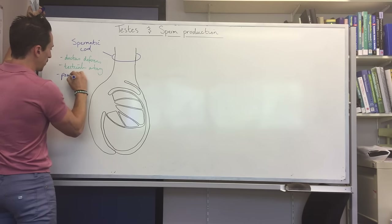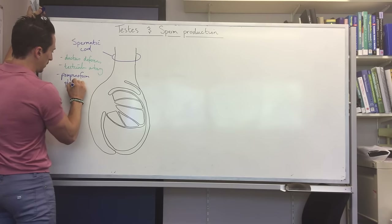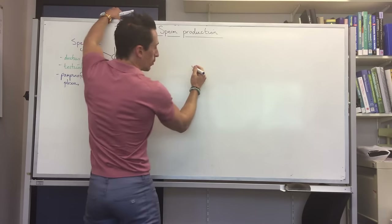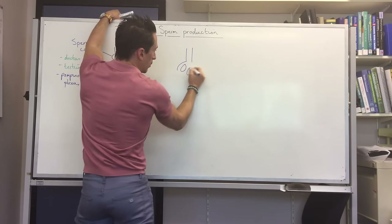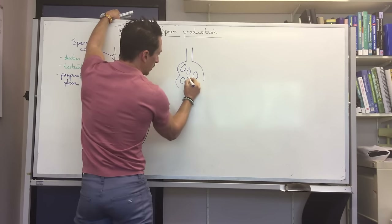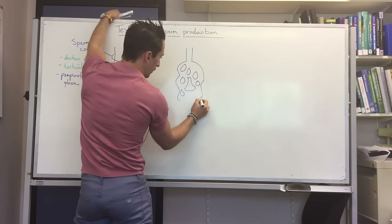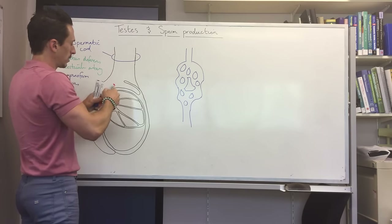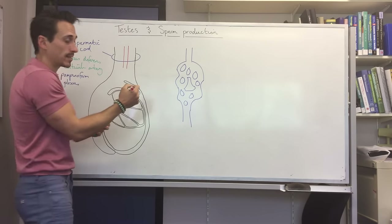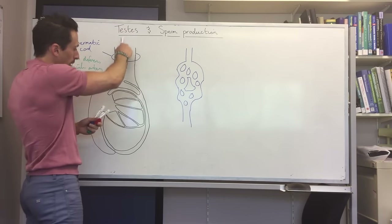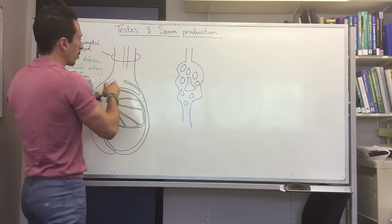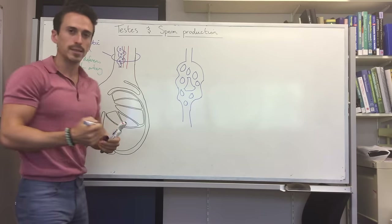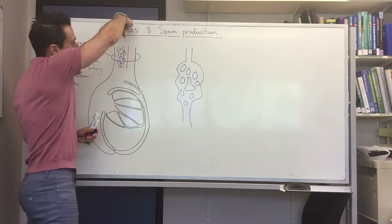This venous structure is called the pampiniform plexus. Similar to spinal nerve plexuses, it branches and braids. You have the testicular artery — a branch of the abdominal aorta — coming down providing warm, nutrient-rich blood to the testes, and the pampiniform plexus running right next to it.